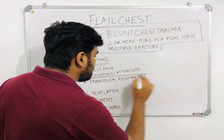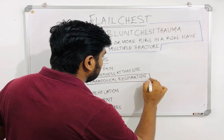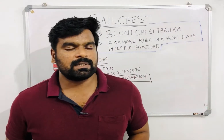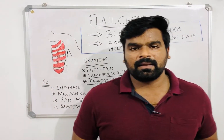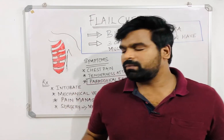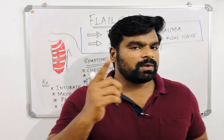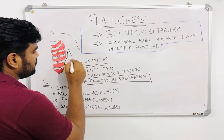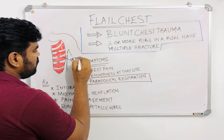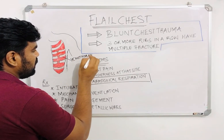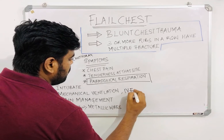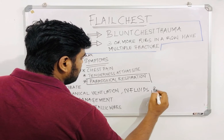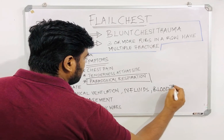This is the most classical feature you can see in flail chest. As soon as the patient is diagnosed with flail chest, you want to intubate the patient so as to prepare for mechanical ventilation. And since the rib is punctured inside the lungs, there is a chance for hemothorax, so we also want to start IV fluids to prevent hypovolemic shock, and blood transfusion if required.